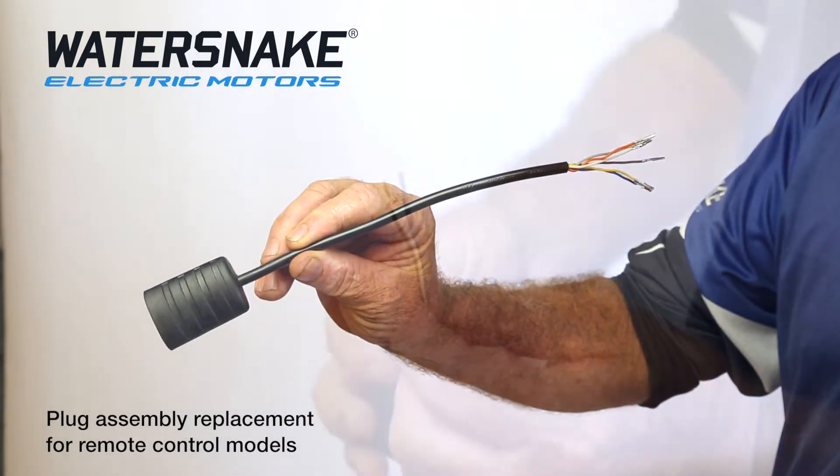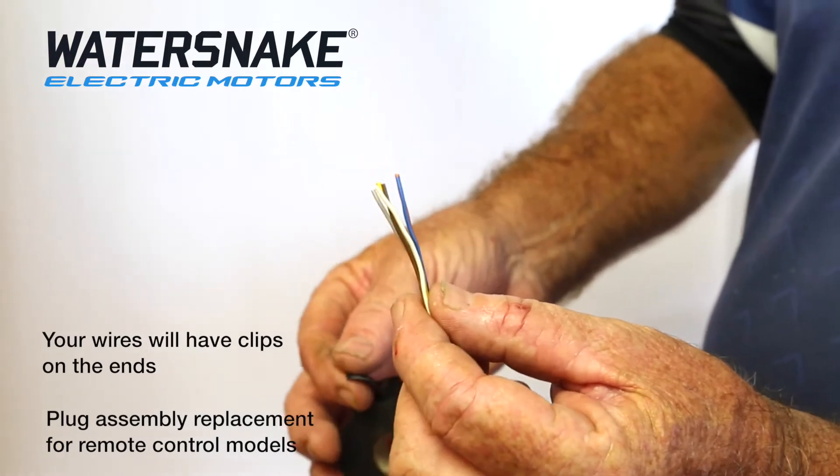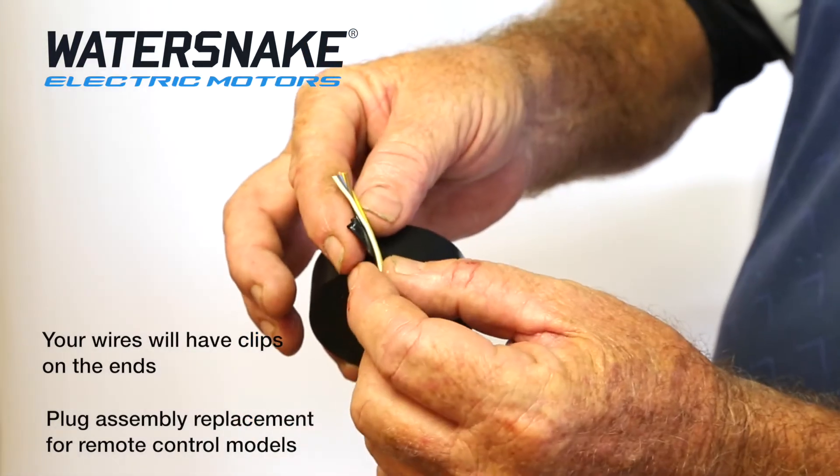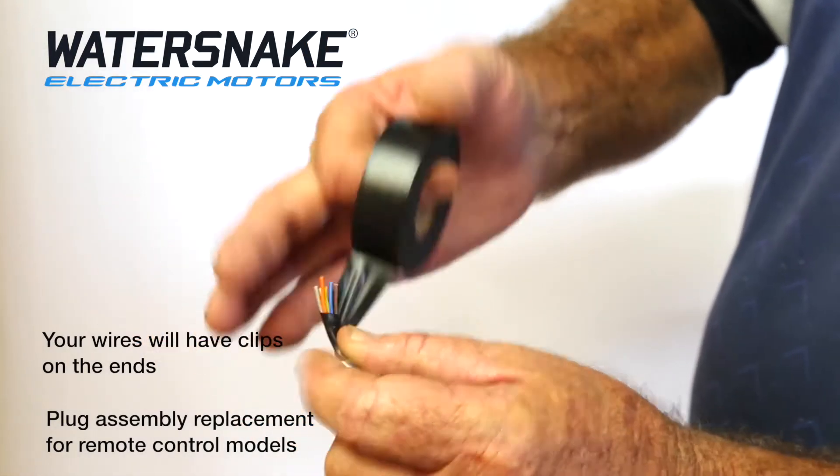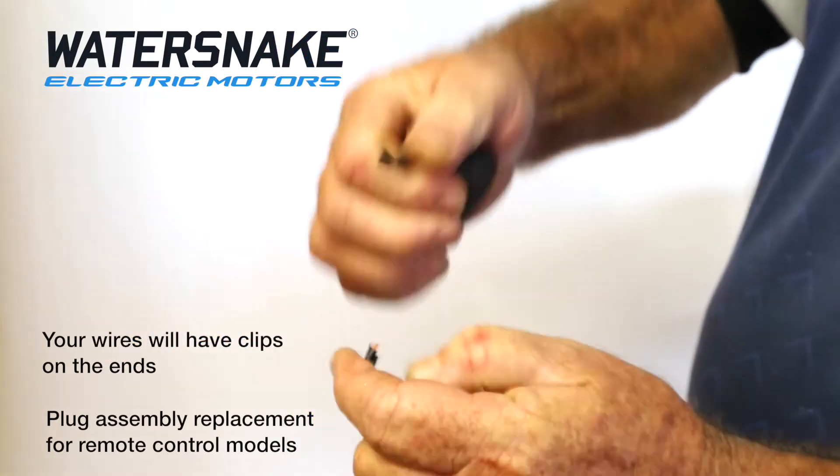We're going to take the ends of our six wires and wrap a little bit of insulation tape around the end. You only need a couple of turns like that, and then just break it off.